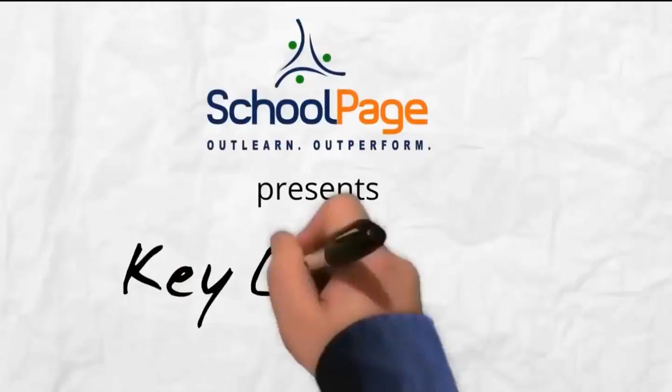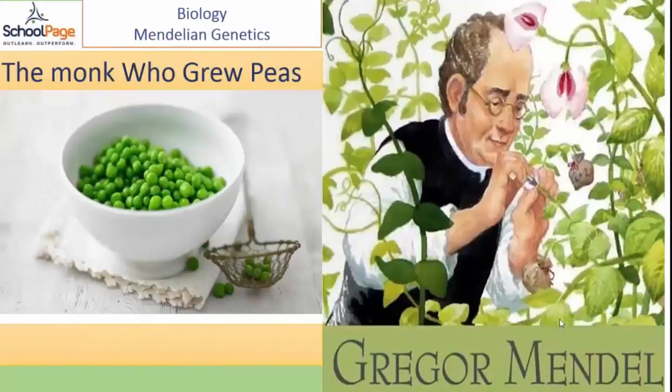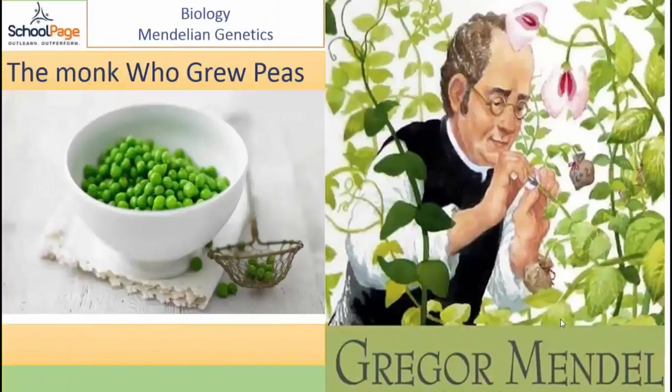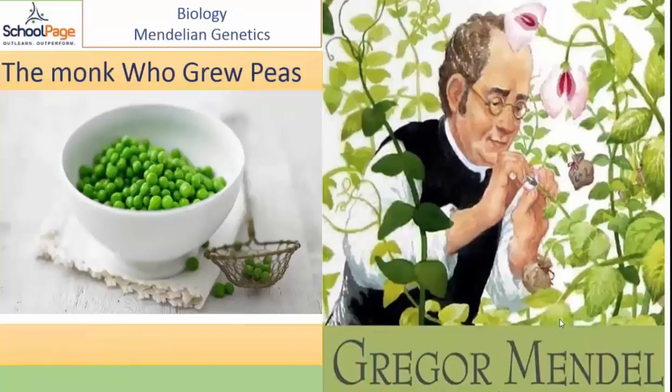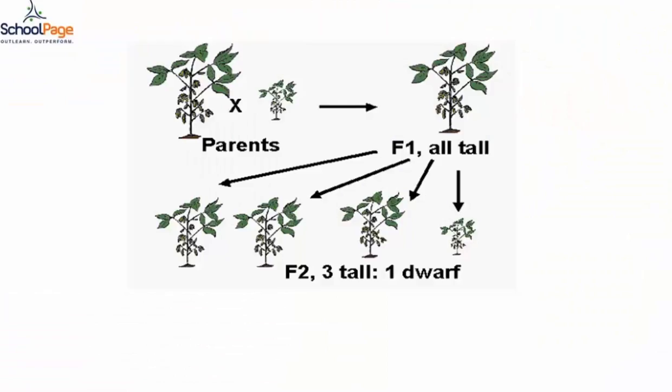Welcome to School Page Key Concepts: Mendelian genetics, summarized with the first law of inheritance — the law of segregation, or purity of gametes. The monohybrid cross done by Mendel involved parents in homozygous condition: a tall plant homozygous for tallness, and a dwarf plant which was double recessive for tallness. The F1 progeny were all tall.